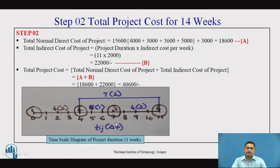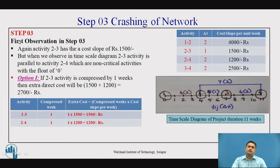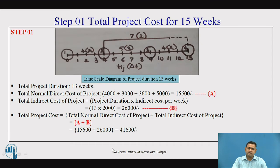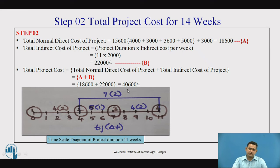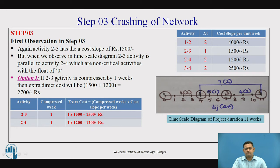This is the newly obtained time scale diagram for the project duration of 11 weeks. Now let us move to the next step and compress once again using this time scale diagram. We are comparing: in the first step, the total project cost was 41,600; now after compression to 11 weeks, the project duration has reduced and the cost has also reduced to 40,600. Let us try to compress once more to see whether the cost remains the same or increases.